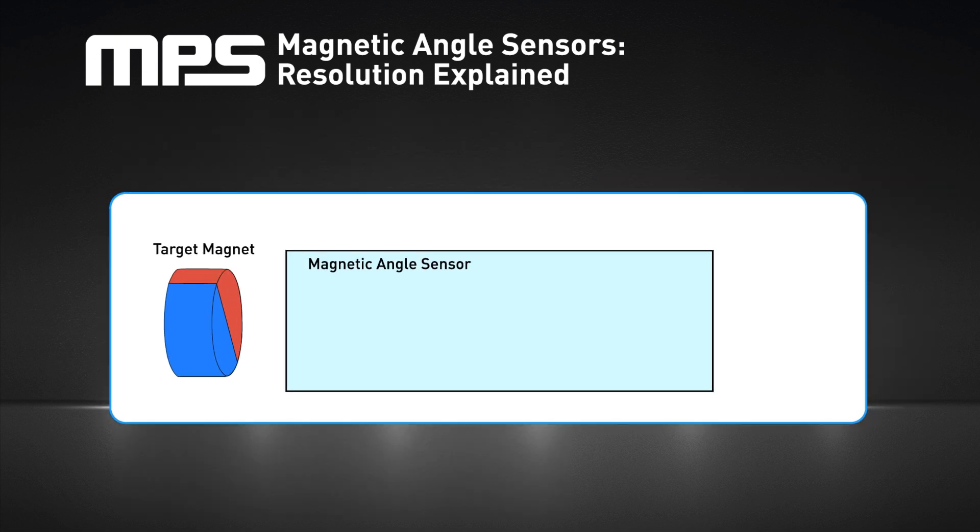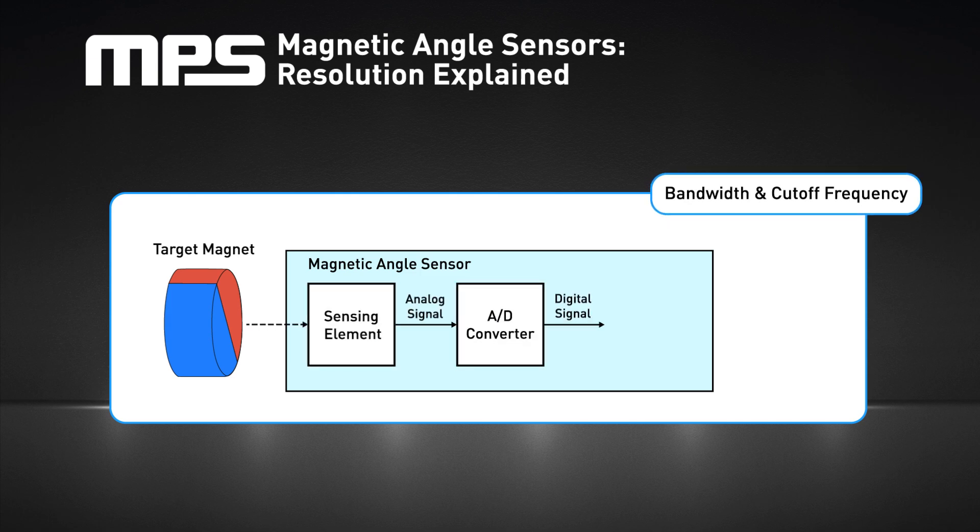When discussing sensor performance, a key parameter that is often overlooked is the bandwidth, also known as the cutoff frequency. Sensor bandwidth corresponds to a signal's frequency range, which can be measured by the sensor. Signals with a frequency larger than the sensor bandwidth are attenuated. A detailed characterization of the sensor would require its transfer function in an analytical or graphical form. At the bare minimum, the cutoff frequency should be provided.